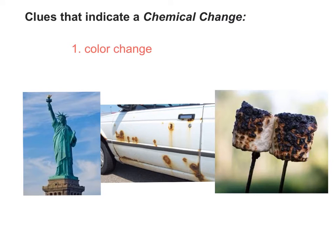We'll talk about corrosion more tomorrow. On the right we have s'mores marshmallows that have been burned — they drastically changed from white to this black-brown color. That is a definite chemical change; it's no longer necessarily marshmallow, it's now created a new substance on the outside. Please hit pause and copy number one — color change — into your notes.